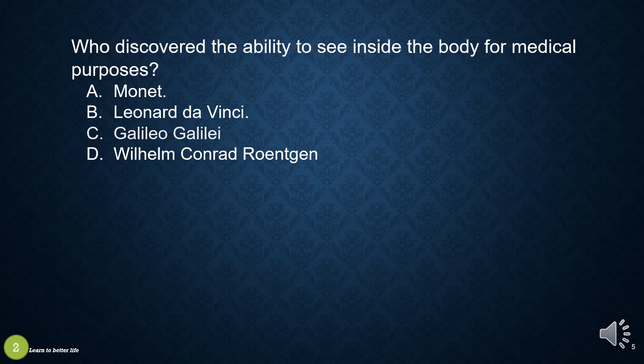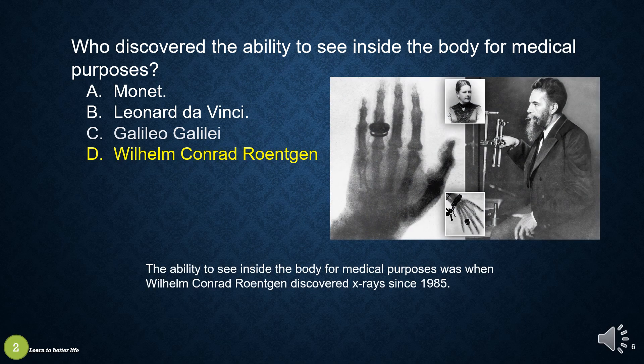Who discovered the ability to see inside the body for medical purposes? a. Monet, b. Leonardo da Vinci, c. Galileo Galilei, or d. Wilhelm Conrad Roentgen. The answer is d, Wilhelm Conrad Roentgen. The ability to see inside the body for medical purposes was when Wilhelm Conrad Roentgen discovered x-rays in 1895.